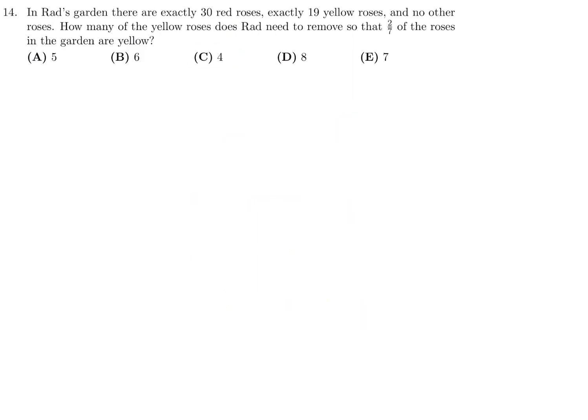In Rad's garden, there are exactly 30 red roses, exactly 19 yellow roses, and no other roses. How many of the yellow roses does Rad need to remove so that 2 over 7 of the roses in the garden are yellow? 30 red, 19 yellow. We want to remove a certain number. Let's say that's x. Once I do that, the number of yellow roses, which will be 19 minus x, over the total, which will be 30 plus 19 minus x, will be equal to 2 over 7.